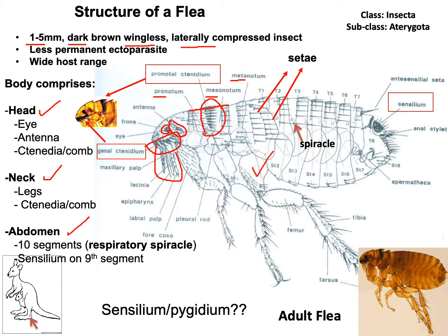On the neck region there are three pairs of legs, and the third pair is heavier compared to the first and second pair. As a result, the flea can jump from the host body or onto the environment. In the abdominal region there are ten segments — tergum 1 to tergum 10 — and one can easily identify eight segments externally.